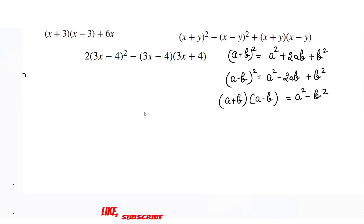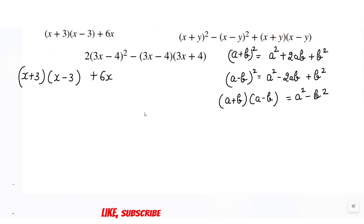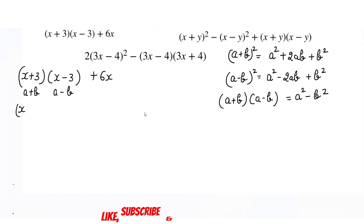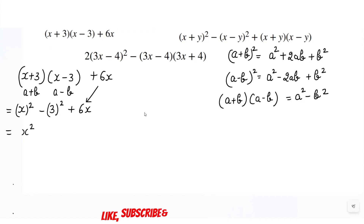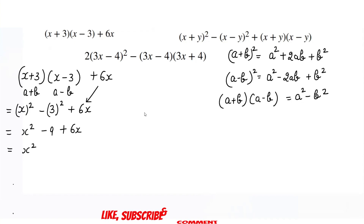Let's take the first example: x plus 3 into x minus 3, plus 6x. The first part is in the form of a plus b into a minus b, so it equals a squared minus b squared. Here a is x, so we get x squared minus 3 squared, which is x squared minus 9, plus 6x. We can write the answer as x squared plus 6x minus 9.